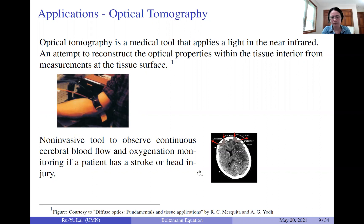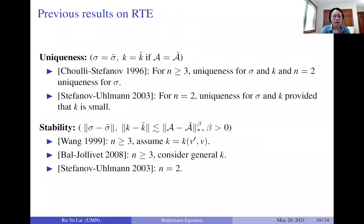Doctors can use this to determine if a patient has had a stroke or head injuries. This is a picture of the head: there is a source on the incoming part and a detector nearby to pick up the outgoing photons, allowing us to observe blood flow and oxygenation.